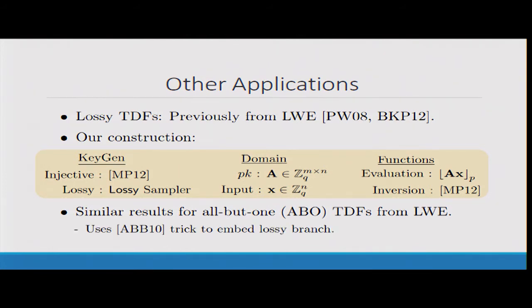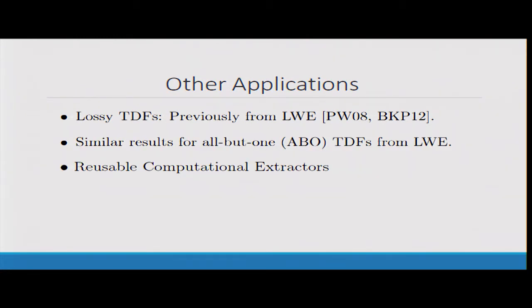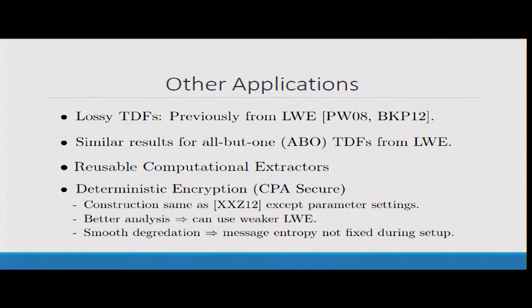We also get similar results for these cousins of the lossy trapdoor functions, the all but one functions, using the ABB trick. Other applications are we also get reusable extractors and deterministic encryption. The construction's actually the same as the previous one, but we have a tighter analysis, so we can use a weaker learning with errors assumption. We also have this smooth degradation property, which means that message entropy is not fixed during the setting of the parameters.